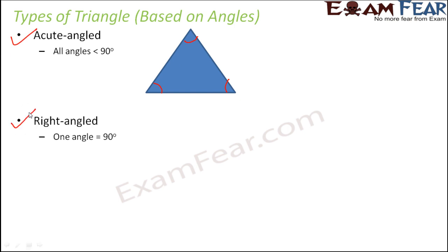The next type would be right angled triangle. So in a right angled triangle, one angle is 90 degrees. As you can see here, this angle is 90 degrees and other two angles are definitely acute angles. Now, do you think that you can have a triangle where two angles are 90 degrees? No. You can't.